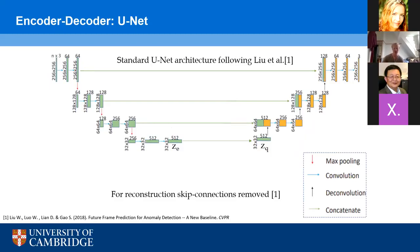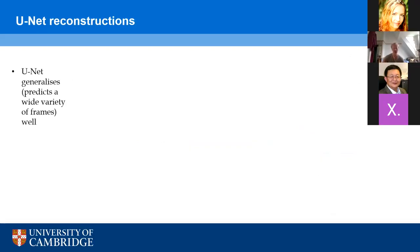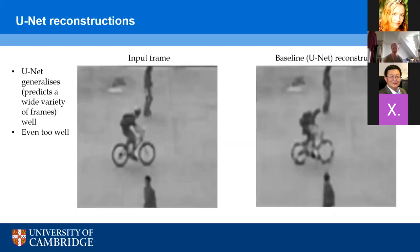So instead of predicting a future frame, we just input a single frame and try to get the same frame back at the output. But for that task, we remove the skip connections — the green arrows — because otherwise the network could simply copy the inputs to the outputs. UNET generalizes really well; some qualitative analysis shows that it can produce a wide variety of frames and generalizes really well to unseen examples. However, some more analysis shows that it generalizes maybe even a bit too well, because it's able to reconstruct abnormal events.